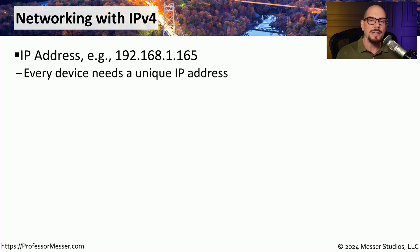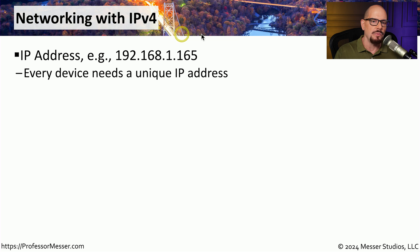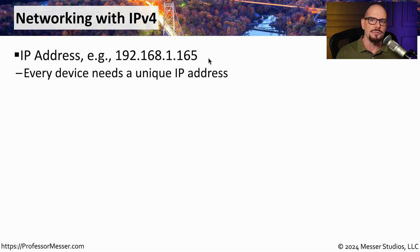An IP address is a series of four numbers separated by a period — something like 192.168.1.165. To be able to properly communicate on the network, every device needs to have its own unique IP address.